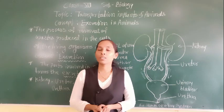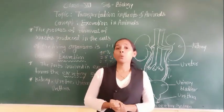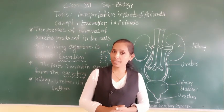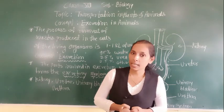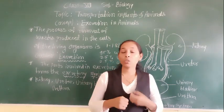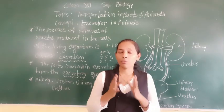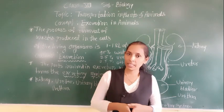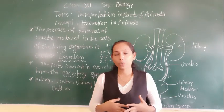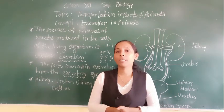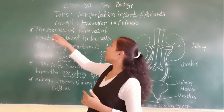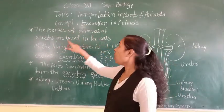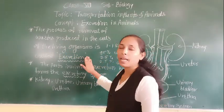Let's find out the answer. The human body is made up of cells. When cells perform their activities and functions, they release a certain amount of waste materials in the form of sweat and urine. It is very important to throw out this waste material from our body. The process of removal of waste products from the cells of living organisms is called excretion.